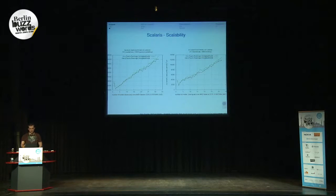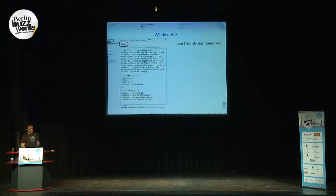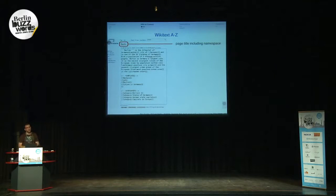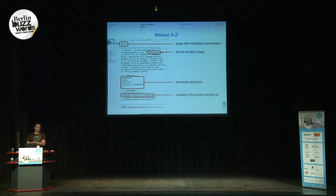Before talking about the application, I want to present some features of wiki and wikitext. When you edit or create a page, the page title is always the index — this is how you retrieve and store pages. Inside a revision you have features like links to other pages. There are more advanced features like templates, which are a form of inclusion — content from another page included in yours. And then there are categories: you can put pages into categories and view all pages inside a given category.